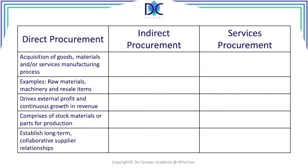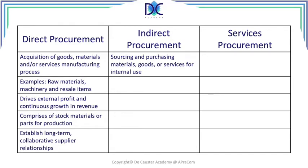In direct procurement, we want to have a long-term collaborative supplier relationship. These are basically the main products that keep our production alive, helping us create high-quality products.